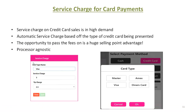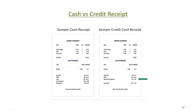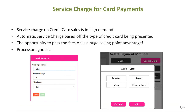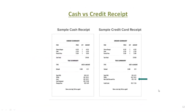Service charge for credit. Service charge on credit is becoming very high in demand as merchants want to pass some of their fees on to their customers. The service charge can be customized to card type — a different percentage for Visa, MasterCard, American Express, etc. — and this feature is processor agnostic. When credit card is selected at checkout, the cashier selects the card type being presented and the system charges the appropriate fee. At this time it is simply a percentage fee.